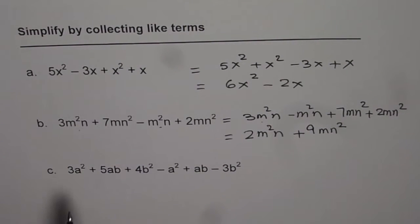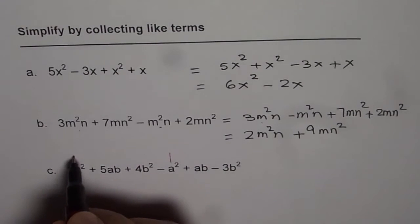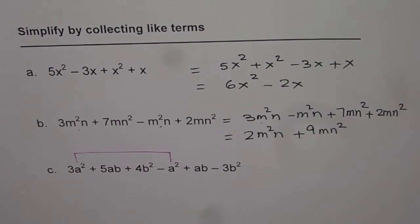The last one. Here we have 6 different terms. Let's combine the like terms. As you can see, a² and a² are the like terms.